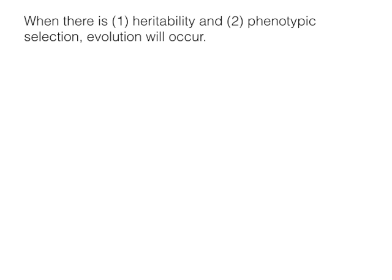So here's what I said last time: when there is heritability and phenotypic selection, then evolution will occur. This is a little bit sloppy — we would have to say directional phenotypic selection and some other things, but basically that's the idea.